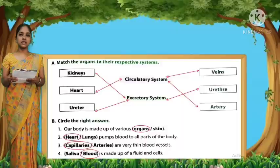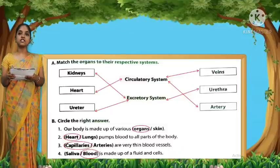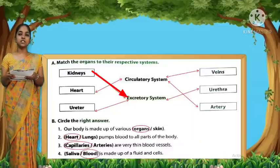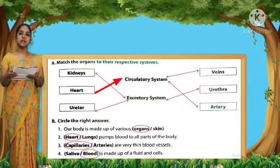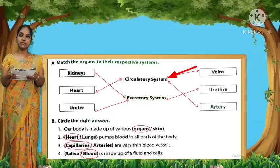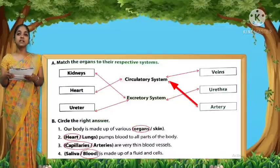Now let us discuss the book exercise. First, take your workbook. The first question asks us to match the organs to their respective systems. Kidneys match to excretory system. Heart matches to circulatory system. Ureter matches to excretory system. Veins match to circulatory system. Urethra matches to excretory system. Artery matches to circulatory system.